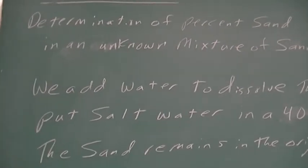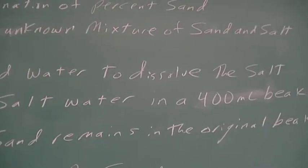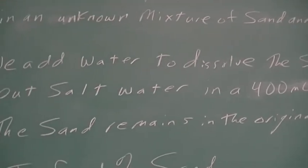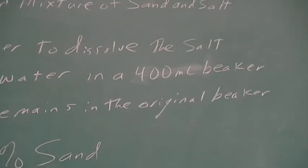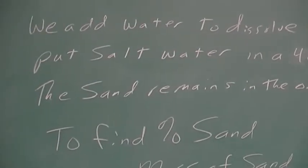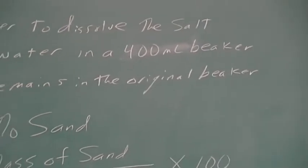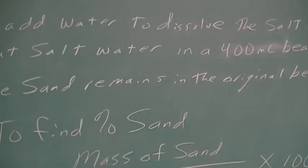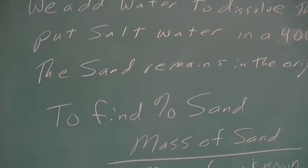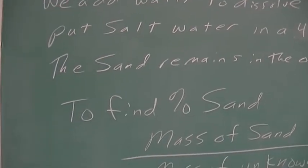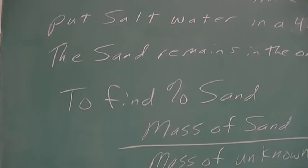This is a very simple experiment. We are going to add water — the water is going to dissolve the salt. We're going to put the salt water in a larger 400 ml beaker, and then the sand will remain in the smaller 100 ml beaker. We are then going to weigh our dry sand. We'll have to heat it to dryness, and then we will have the mass of the sand.